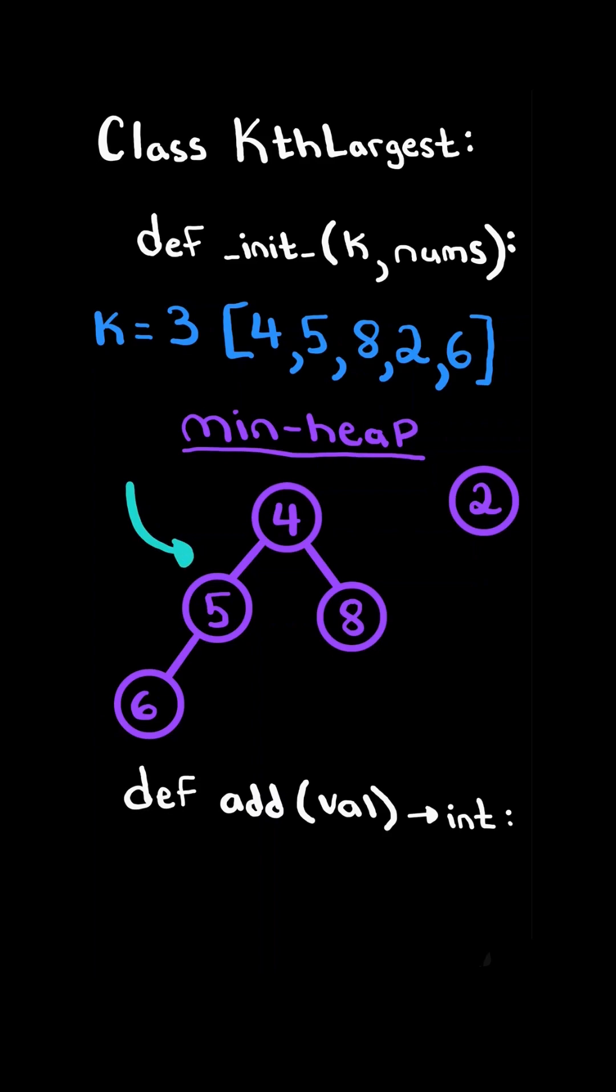Notice the number of nodes in the min-heap is still greater than k, so we continue popping from the min-heap. We replace it with the last node in the heap and swap down with the smaller of its children. Now the min-heap's properties are satisfied. Also notice the number of nodes in the tree is equal to k, so we stop here.